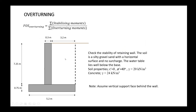Let's go through an example. We need to check the stability of this retaining wall. The soil is a silty gravel sand with a horizontal surface, no surcharge, and the water table lies well below the base — so the water table is not taken into account. Soil properties: c equals zero, angle of friction is 40 degrees, and unit weight of soil is 20 kN/m³. The concrete unit weight of the retaining wall is 24 kN/m³.